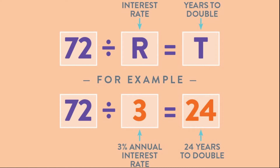The Rule of 72 can apply to anything that grows at a compounded rate — population, macroeconomic numbers, fees, loans. For example, if the GDP grows at 4% annually, then the economy would be expected to double in about 18 years — not exactly, give or take a little bit.